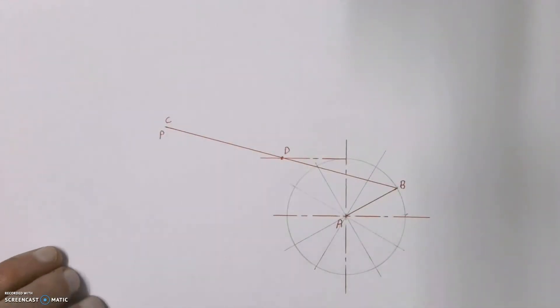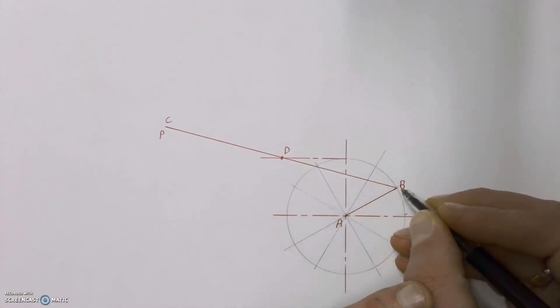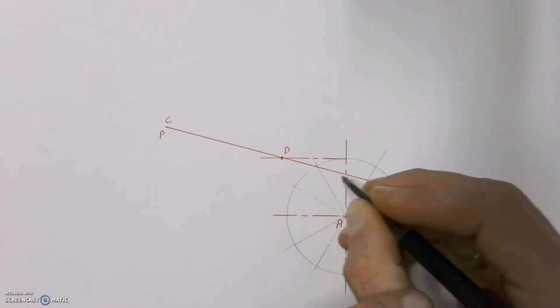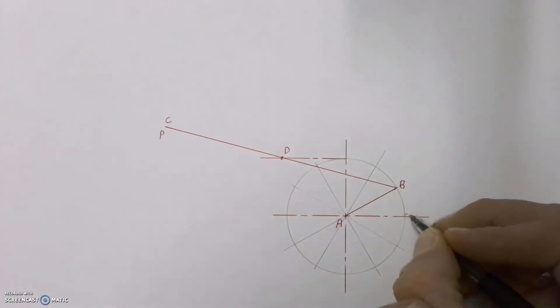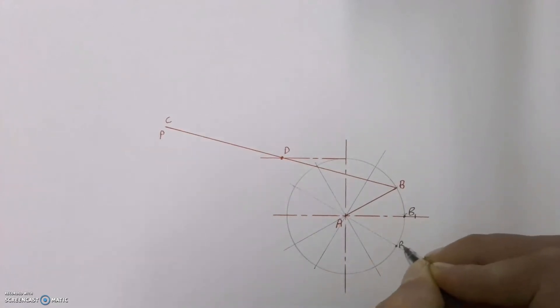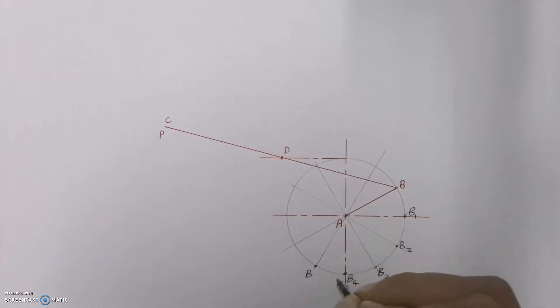Now our circle is broken up into 12 parts and our next step is to label all of the new positions that point B can move into as it goes around point A. So there's point B then we'd be going to B1, B2, B3 all the way around labeling each of those points.